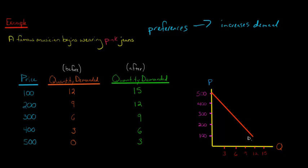So now we need to shift our curve to the right. And so what we're going to notice is that if we look at, let's look at a price of $500. Now in the past, they demanded zero. So we ended up right here. But now they're demanding three pairs of jeans.